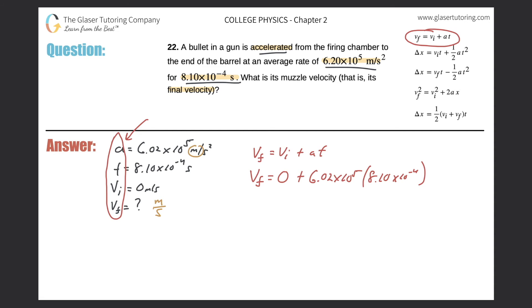So now let's go back to the calculation here. All we have to do is basically just plug it in. So take 6.02 times 10 to the five, multiply that by 8.1 times 10 to the negative four. And that reaches a final velocity of 488 meters per second. That's the final velocity of the bullet. Three significant figures because I have three significant figures in my acceleration and three significant figures in my time. Therefore, I should have no more than three significant figures in my answer.